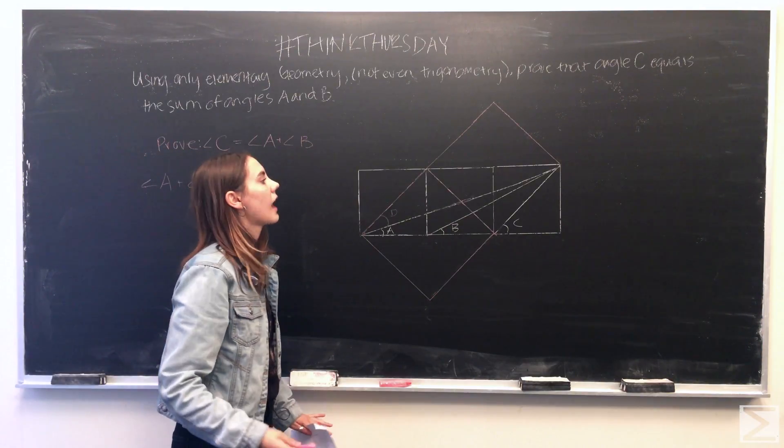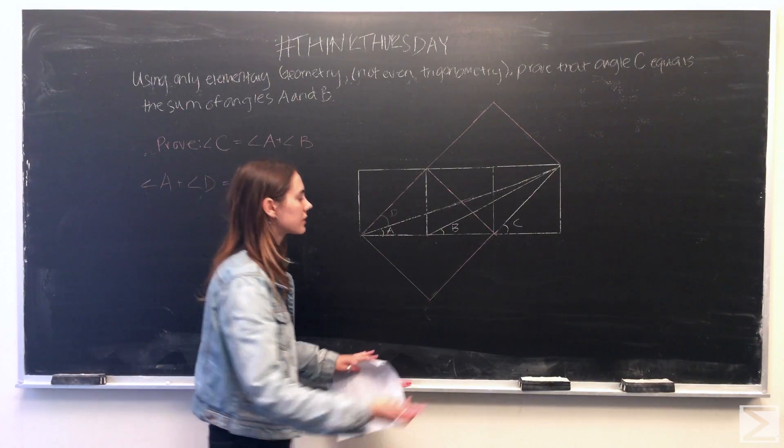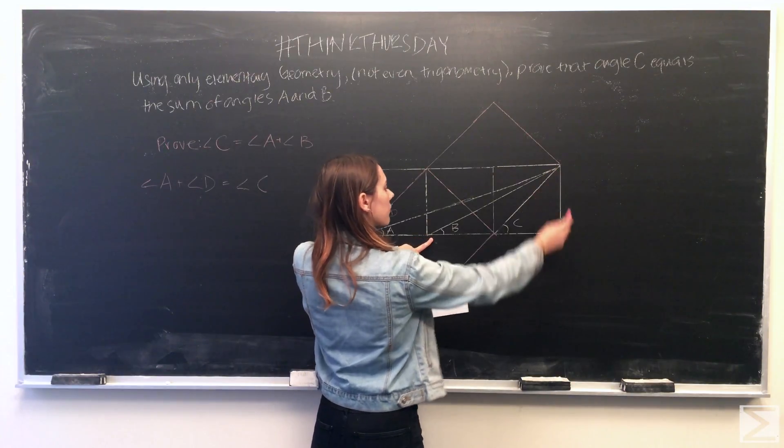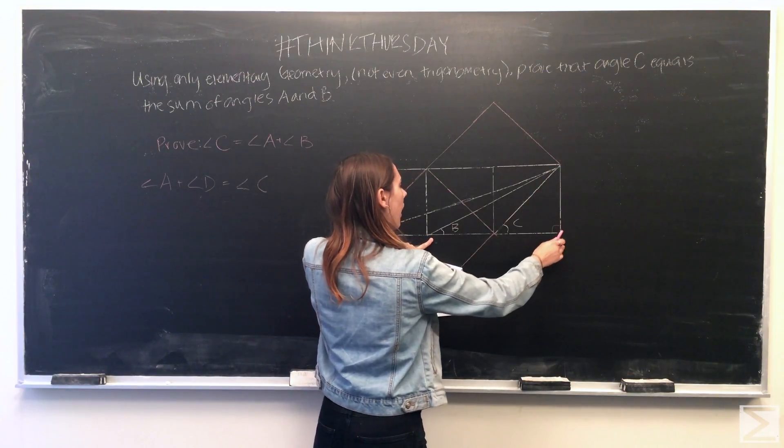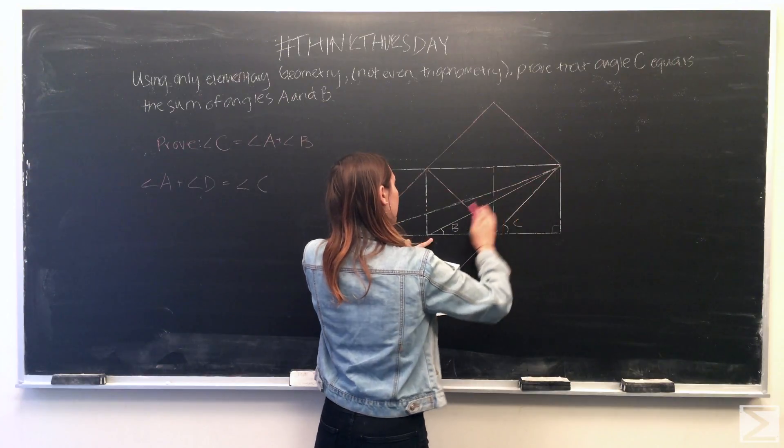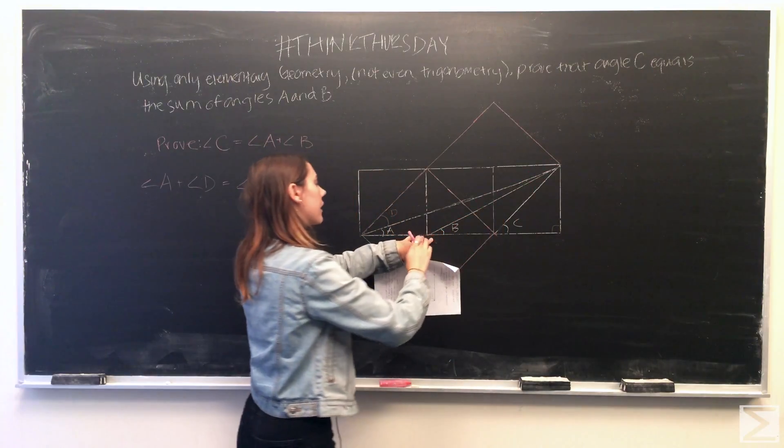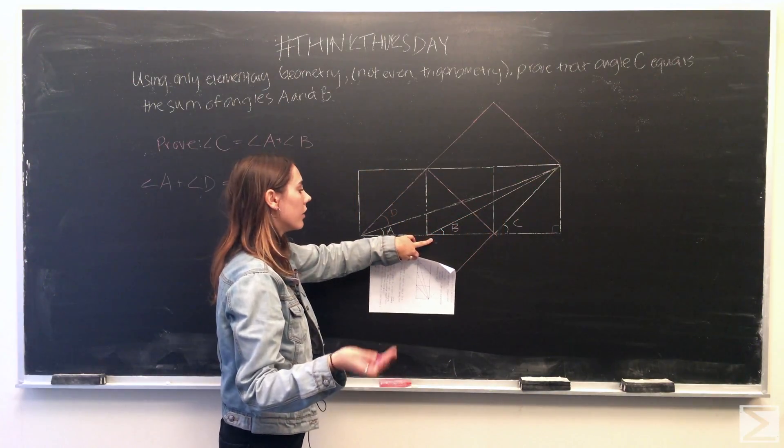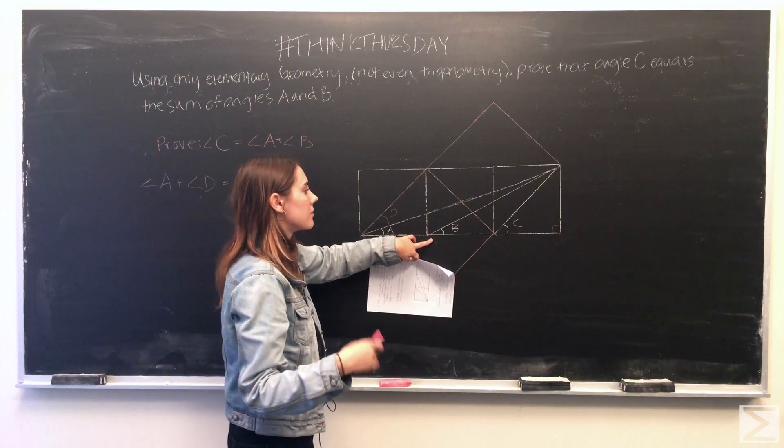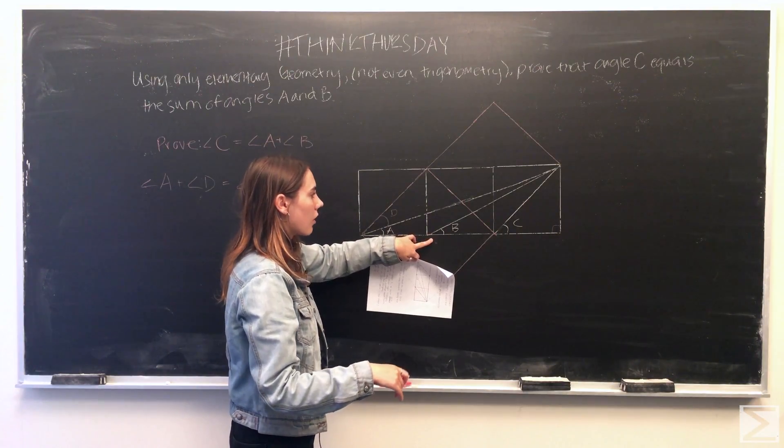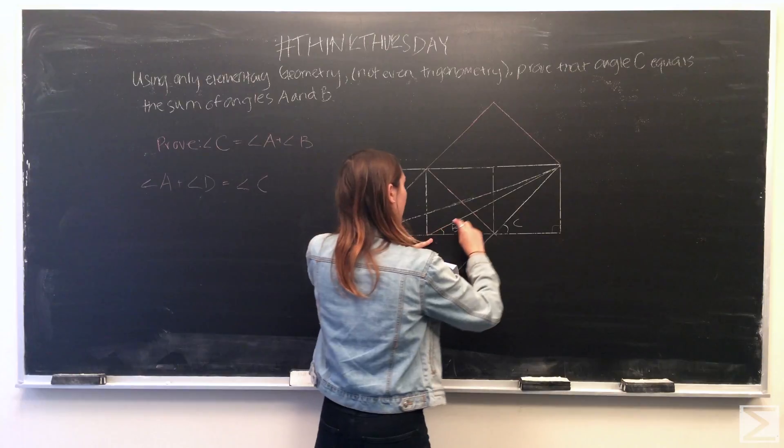So looking at angle B, you'll notice that what angle B does is it creates a right triangle here based on this line that bisects a rectangle down the diagonal, a rectangle created by two squares. So looking at this triangle here,